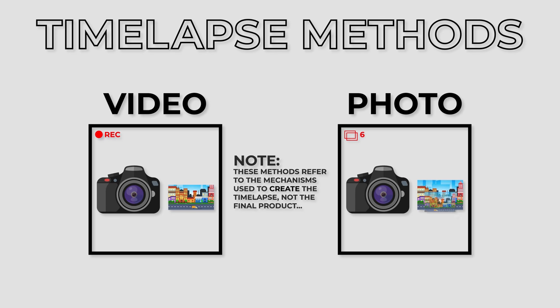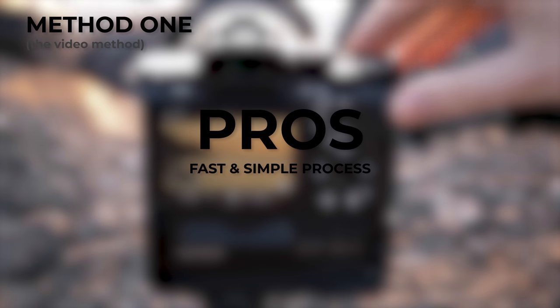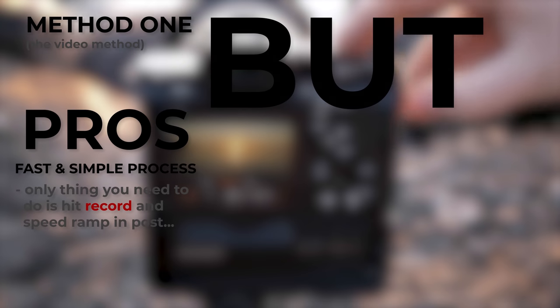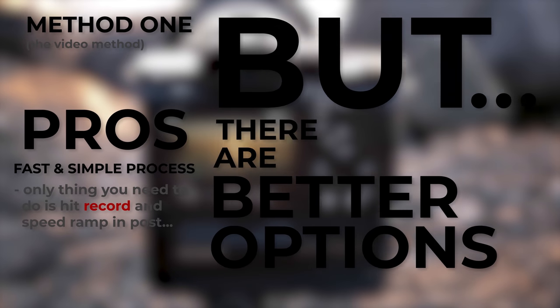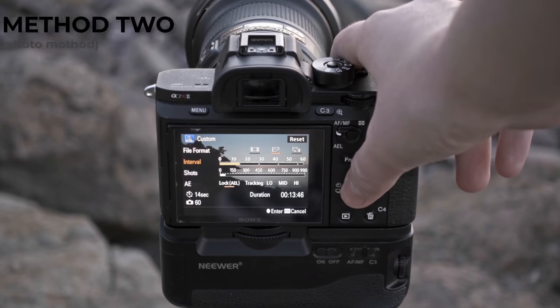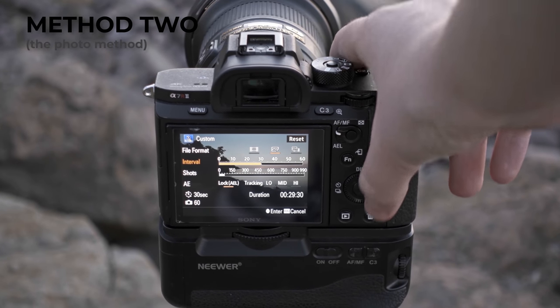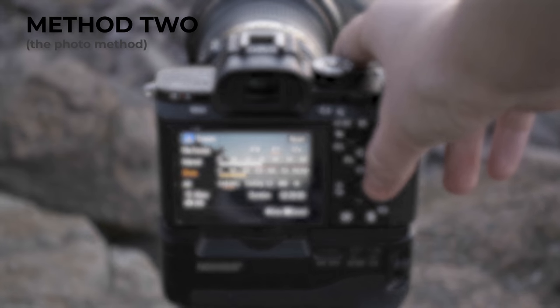The first method, video, involves taking a prolonged video of a subject with a camera, then speeding it up later. This method is very simple and can be great for recording something on the fly, and post-processing is a breeze, but there are better options. The second method, photo, involves taking a sequence of images, usually with a fixed interval, and stitching them together to create a movie. This method offers some significant advantages over video.